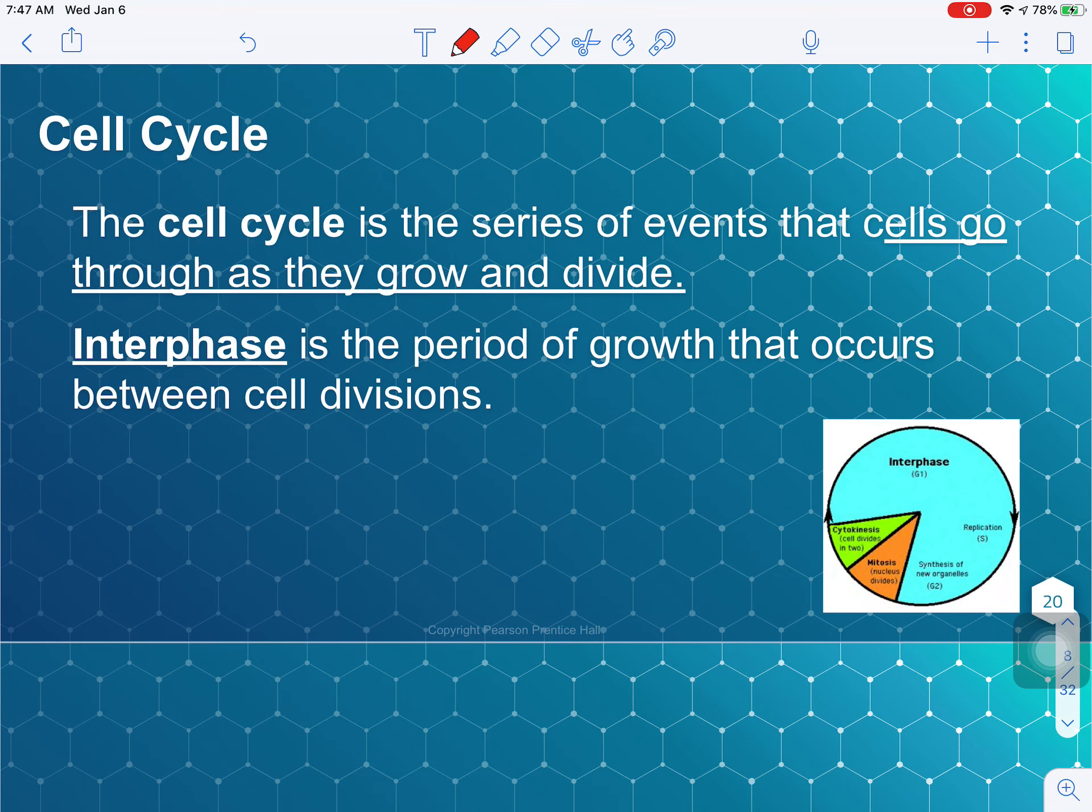But before we can, we need to look at the first steps of the cell cycle. So the cell cycle, by definition, is a series of events that cells go through as they grow and divide. So just like your life cycle is from when you're born to when you grow, maybe reproduce, and then die, that's exactly what a cell has to go through. Although a cell's life cycle is much shorter than your overall life cycle. Most cells, we like to think of cells as dividing constantly, and some of our cells do, like our skin cells need to divide all the time. But most cells spend most of their life cycle or their cell cycle in a period called interphase, which is between cell division.